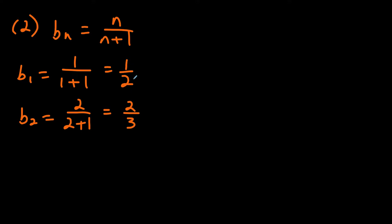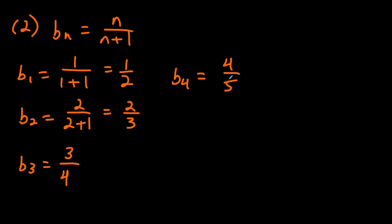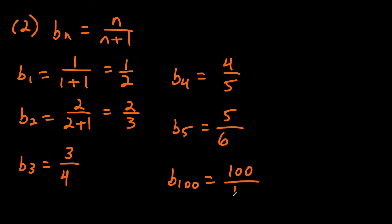With these questions, sometimes you can notice the pattern right away. The pattern I see is that the numerator and denominator are just increasing by one each time. So b sub 3 is three fourths, b sub 4 is four over four plus one which is four fifths, and b sub 5 is five over five plus one which is five sixths. For the hundredth term, plugging in n equals 100 gives us 100 over 101.